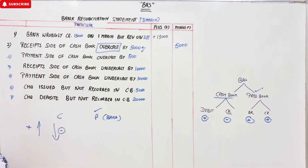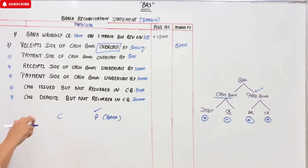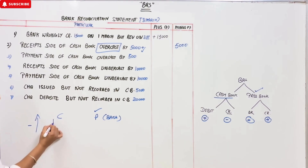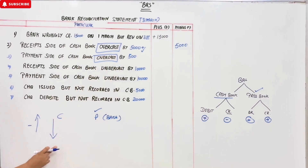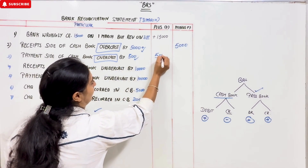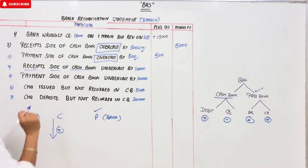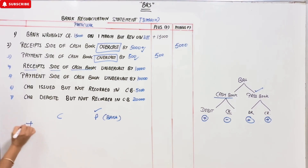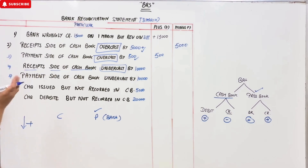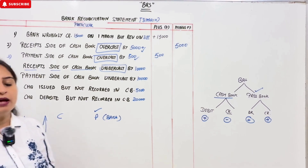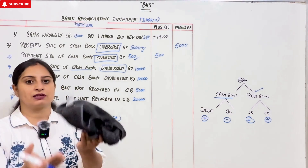Number 3: Payment side of cash book. Payment means minus — that is going to go minus. Payment side of cash book overcast means it has been recorded more on the payment side. So the cash book shows more payments than actual — for correction, we need to reduce it. Receipt side undercast means less was recorded on the receipt side, so we need to add. If something is less than what you have, you add to correct it. So the receipt side undercast entry goes to plus.